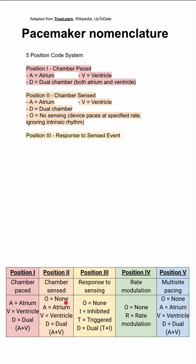Position three is the device's response to a sensed event. An I indicates that it inhibits the output pulse and recycles timing. A T indicates that it triggers the output pulse. An O would be no response to a sensed input. And a D would be some combination of inhibition and triggering a response.